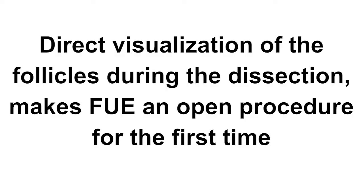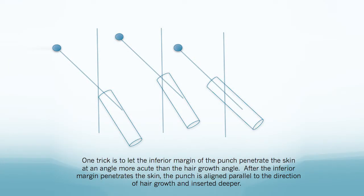Opening the punch allows the operator to see the graft during the dissection process. Direct visualization of the follicles during the dissection makes FUE an open procedure for the first time. One can verify the proper position of the punch on the skin with the follicles located in the center of the incision or to the top, bottom, left, or right of the arc of the incision. One can alter the insertion angle slightly based on the position of the follicles inside the window punch.